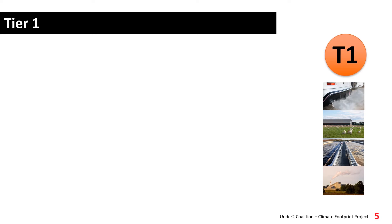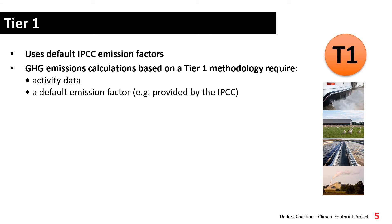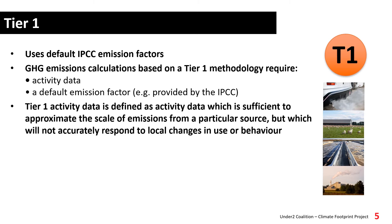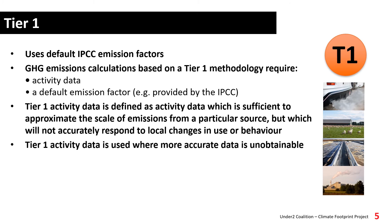Let's take a look at each tier in more detail, starting with tier 1. Tier 1 uses default emission factors from IPCC guidelines. In order to complete a tier 1 emissions calculation, you combine the emission factor from the IPCC guidelines with the applicable activity data. Activity data is defined as that which is sufficient to approximate the scale of emissions from a particular source, but which will not accurately respond to local changes in use or behaviour. This means that the activity data would be expected to be high level and is unlikely to accurately reflect local variations in emission profiles. Tier 1 activity data is the starting point and should be used where more accurate data is unobtainable.